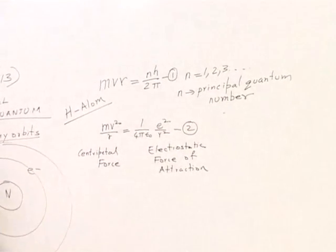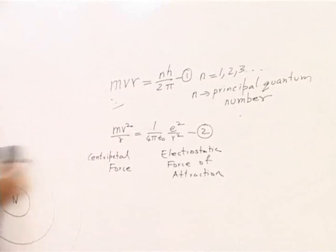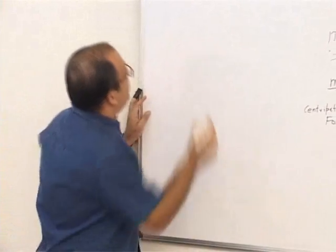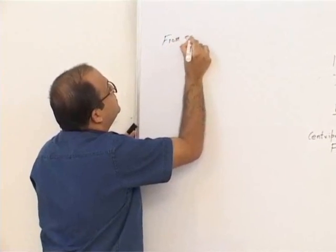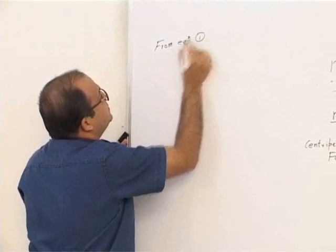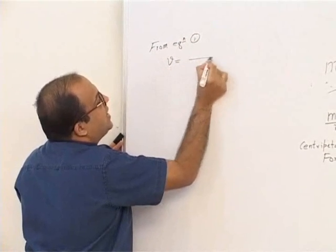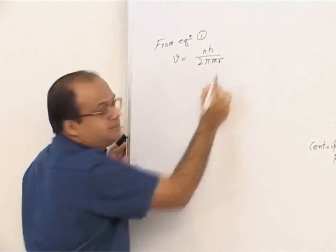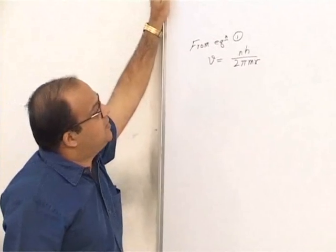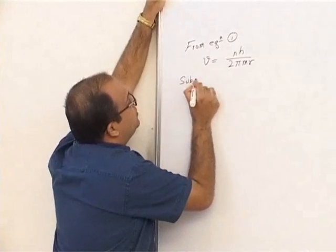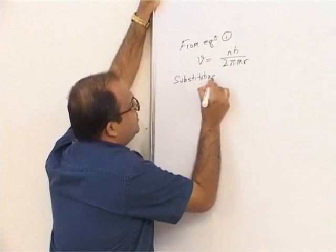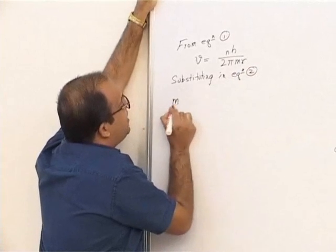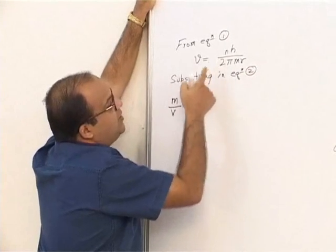The first equation is mvr = nh/2π. From equation 1, v becomes nh/2πmr. Now we substitute this expression for v into equation 2.